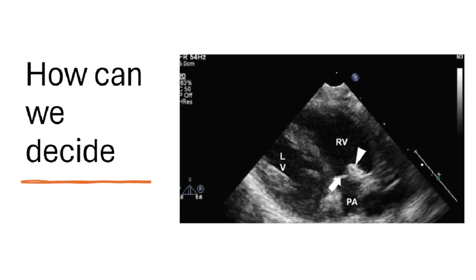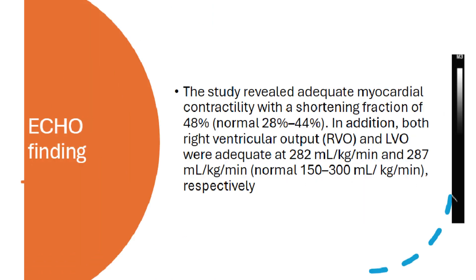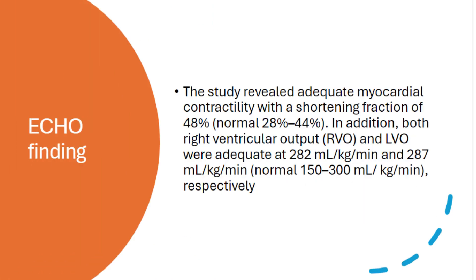The easiest way to identify the cause of shock is by performing an echo, and this is what we did. The study revealed adequate myocardial contractility with a shortening fraction of 48% — normal range 28% to 44%. In addition, both right ventricular output (RVO) and LVO were adequate at 282 and 287 milliliters per kilogram per minute respectively, within the normal range of 150 to 300 ml/kg/min.